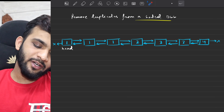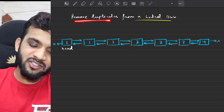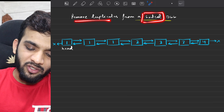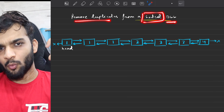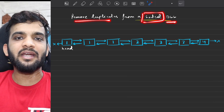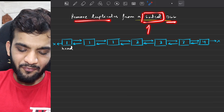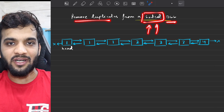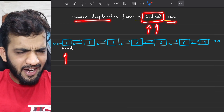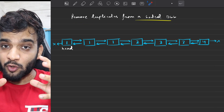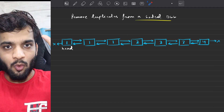The problem that we will be solving today is removing duplicates from a sorted doubly linked list. You are given the head of the doubly linked list and you have to remove all the duplicates.